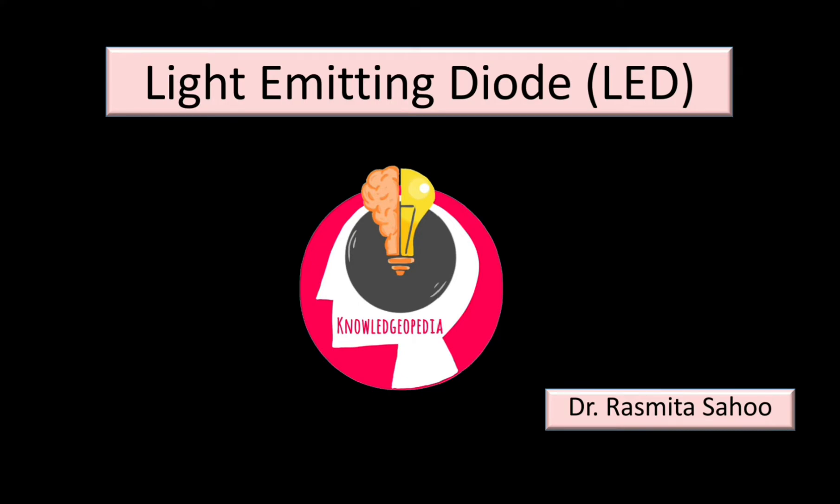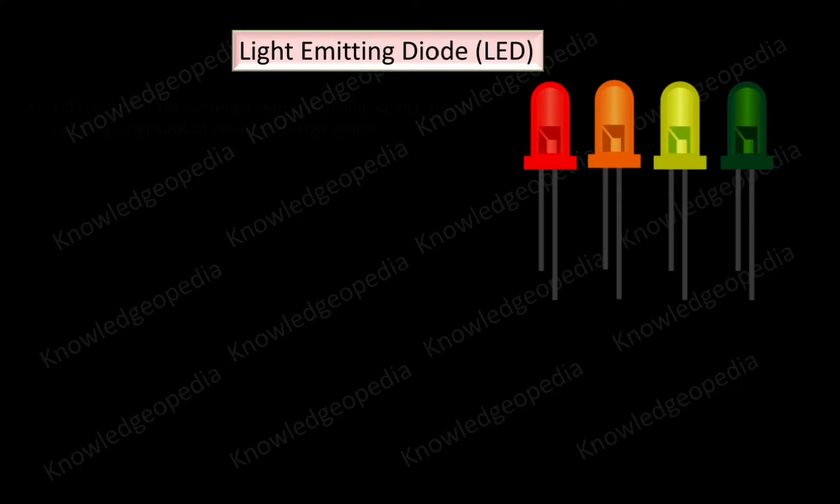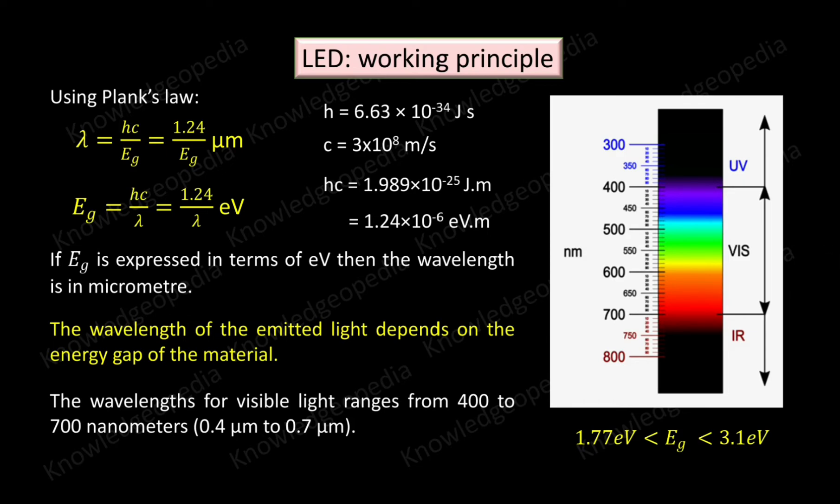This is what we discussed in the last class. We have seen that the wavelength of the light emitted from the LED depends on the energy gap of the material used for constructing the LED. We have also seen that the wavelength of visible light ranges between 700 nanometer to 400 nanometer.